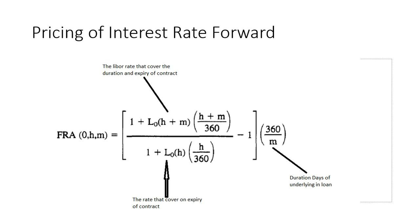In the pricing formula, L-naught(H+M) is the rate covering the whole contractual period. So if H is 30 days and M is 180 days, we need a rate covering 210 days, multiplied by (H+M)/360. We divide by one plus L-naught(H) — the rate for H days — multiplied by H/360, then subtract 1 from the whole factor, and finally multiply by 360 over M, which is 180. This gives us the FRA rate.